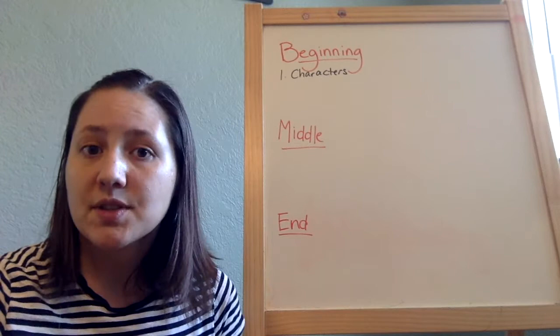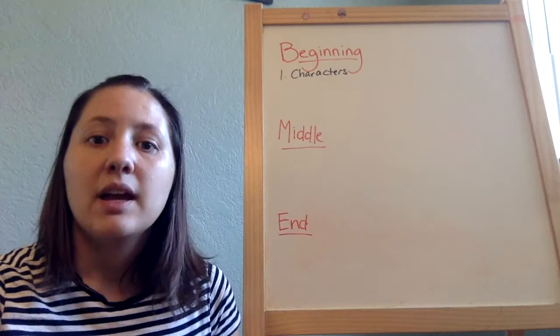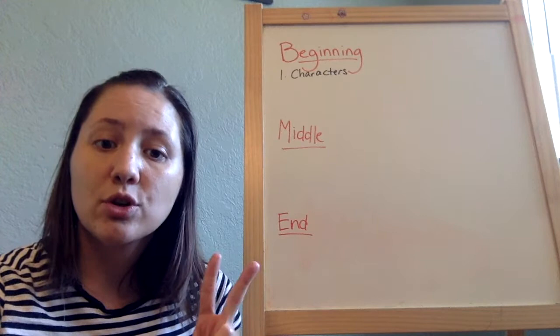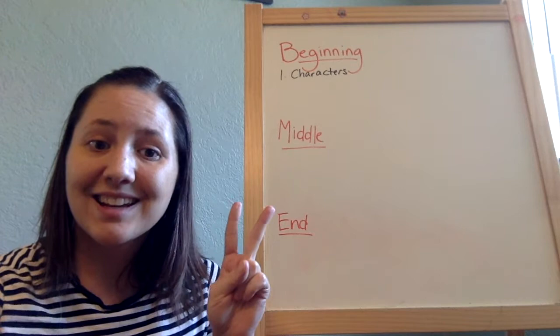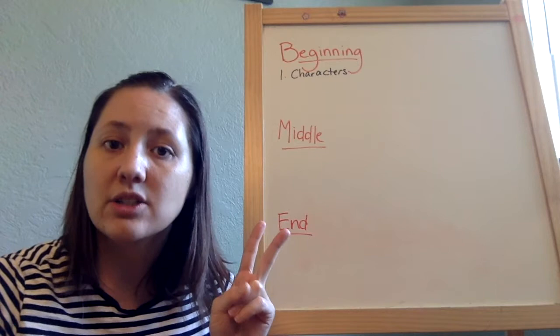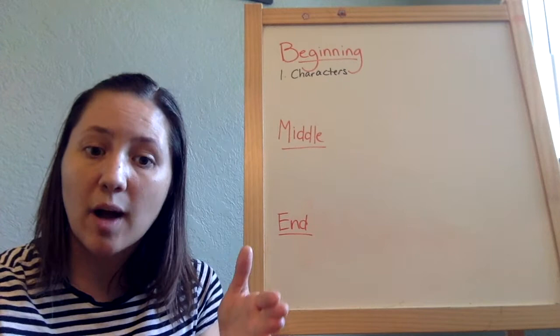An example I like to use is Mo Willems' book Don't Let the Pigeon Drive the Bus. The pigeon is the main character, but there are two primary antagonists. The first is the bus driver, who doesn't want the pigeon to drive the bus. The second is the reader — we are instructed not to allow the pigeon to drive the bus, so we are continually trying to stop the pigeon from getting what he wants.